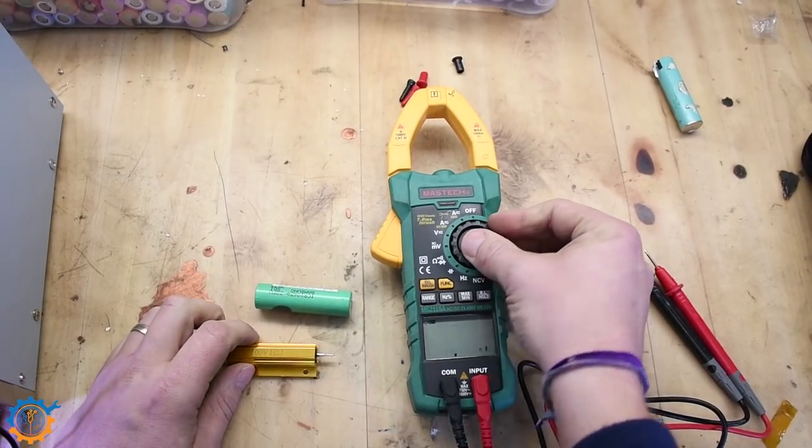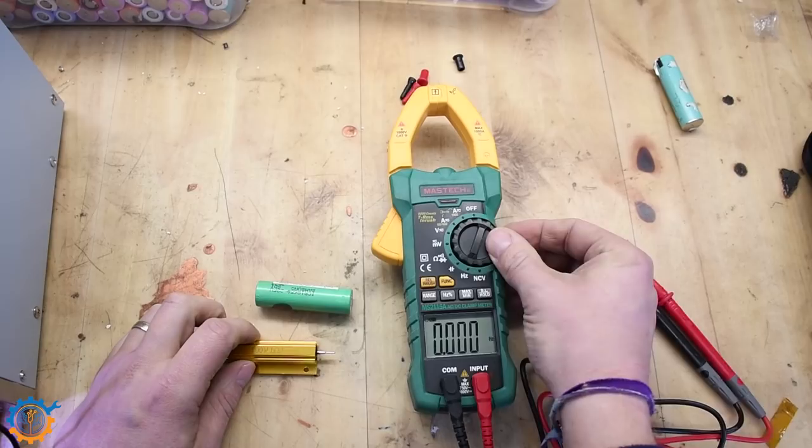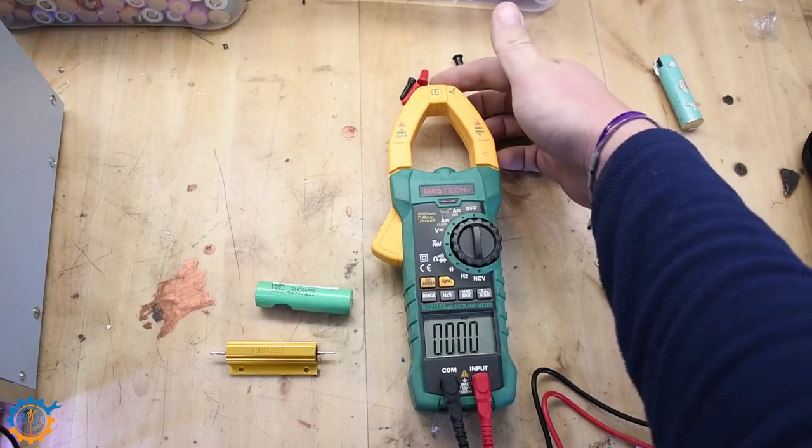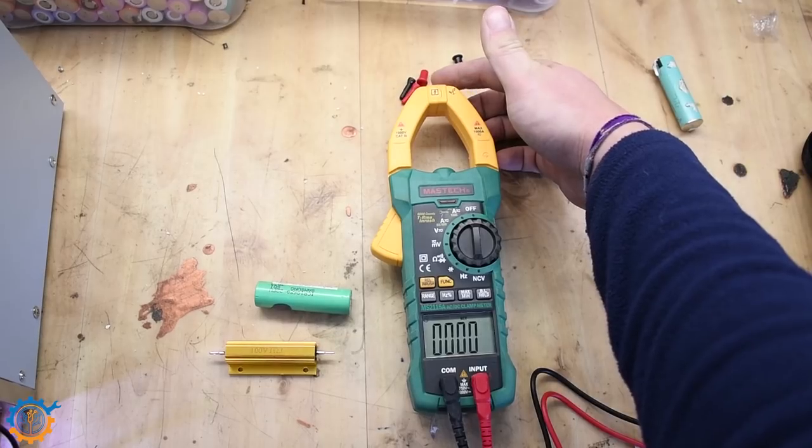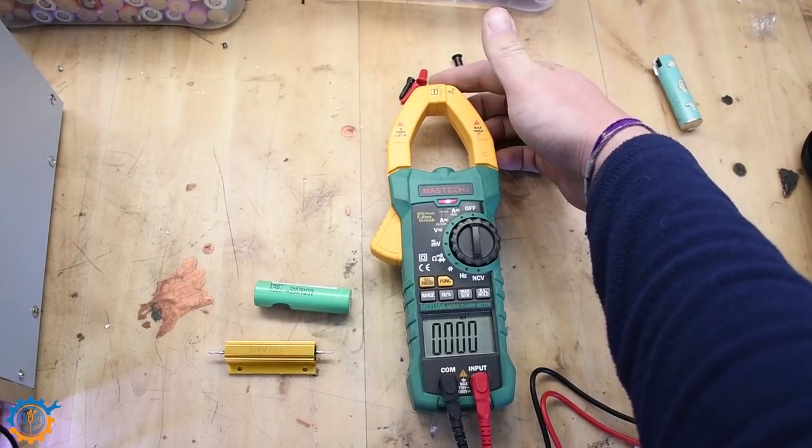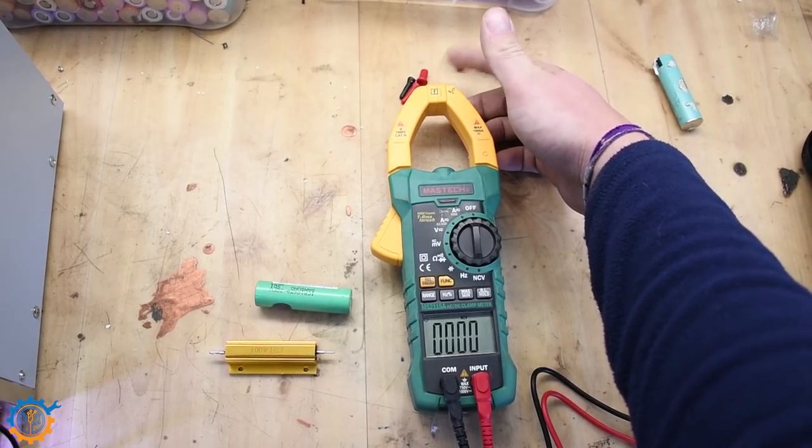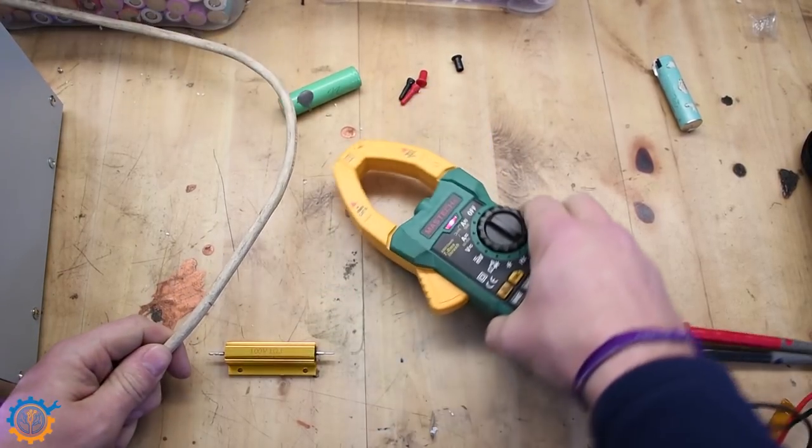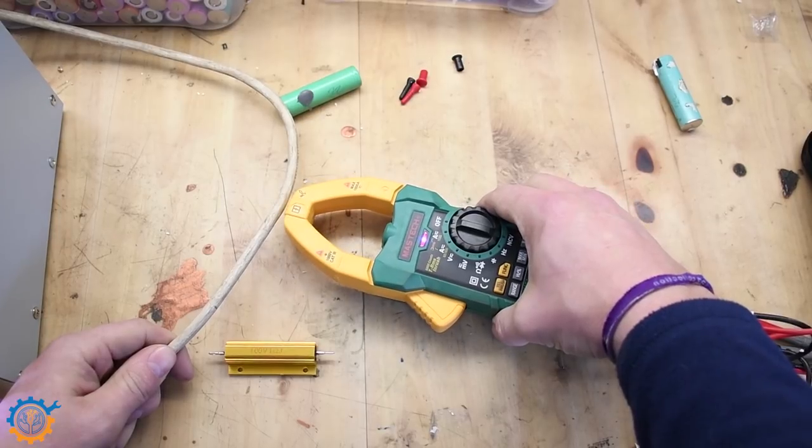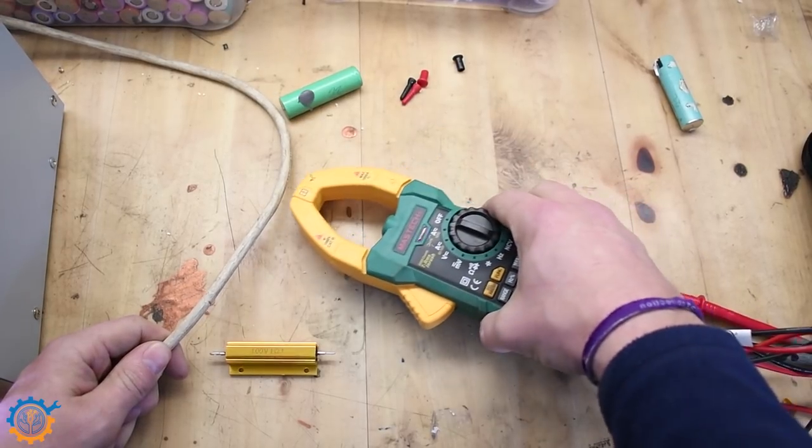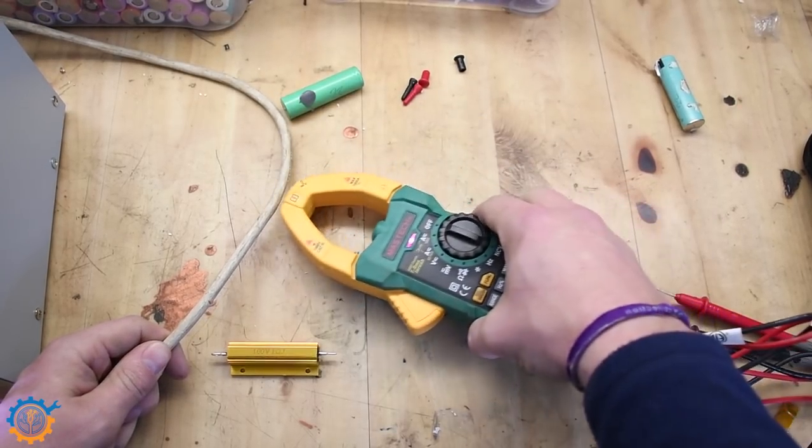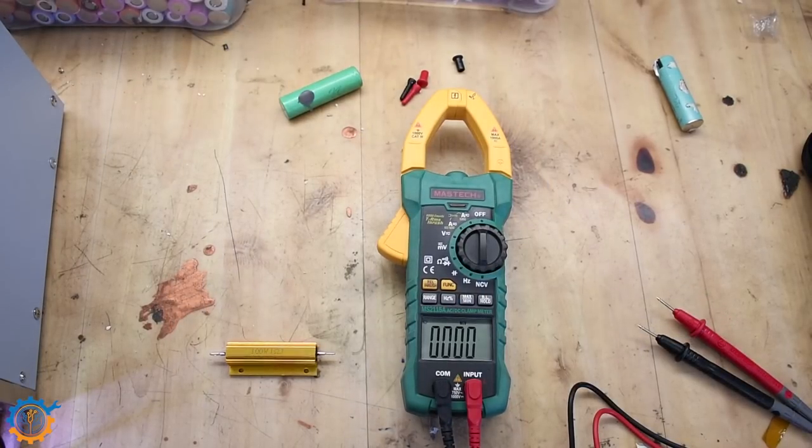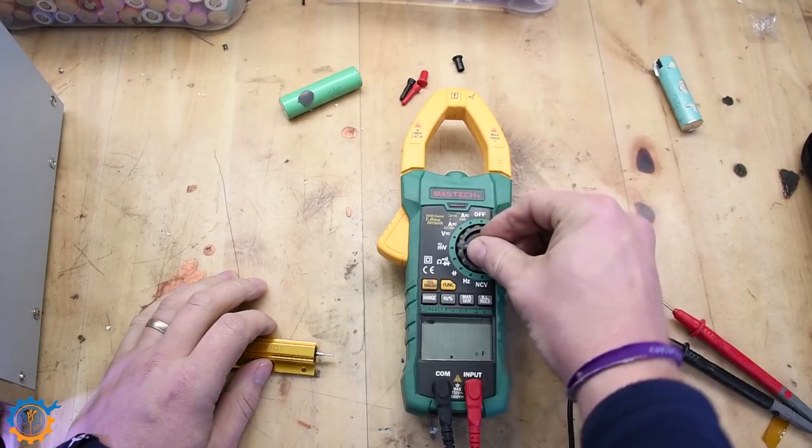It can measure capacitance and frequency. Non-contact voltage detection. This top edge against something and it will measure it. As you can see when I tap it, it beeps. Basically if I take a wire like this one here, it senses the voltage. That's a neat little function as well.